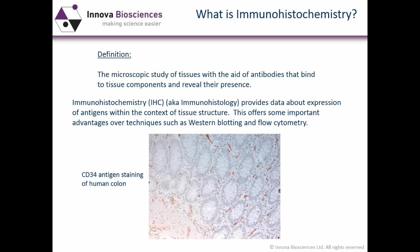Immunohistochemistry is often abbreviated to IHC, and as a technique it provides data about the expression of antigens within the context of the structure of tissues or organs. That offers some important advantages over techniques such as Western blotting and flow cytometry. With Western blotting, you've processed your cell population or organ sample — lysed all the cells and tissues — and you can look for antigen expression within that mixture.